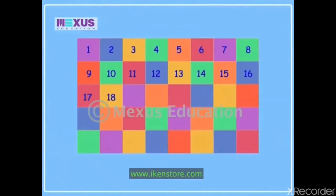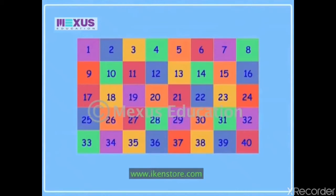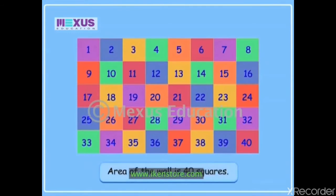So tell me, how many squares did you use to cover this wall up completely? We used 40 squares. 40 squares have completely covered the space on this wall. This means that the area of this wall is 40 squares.